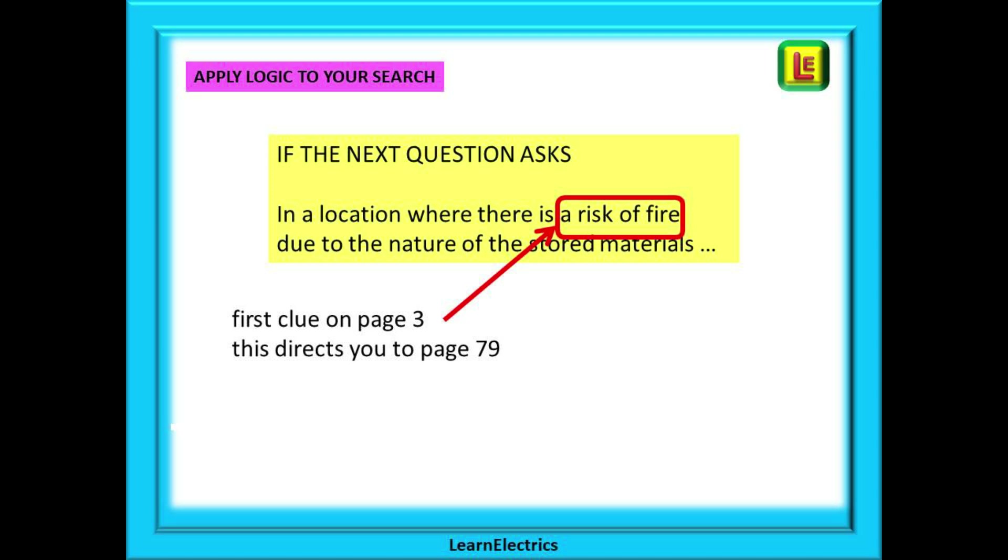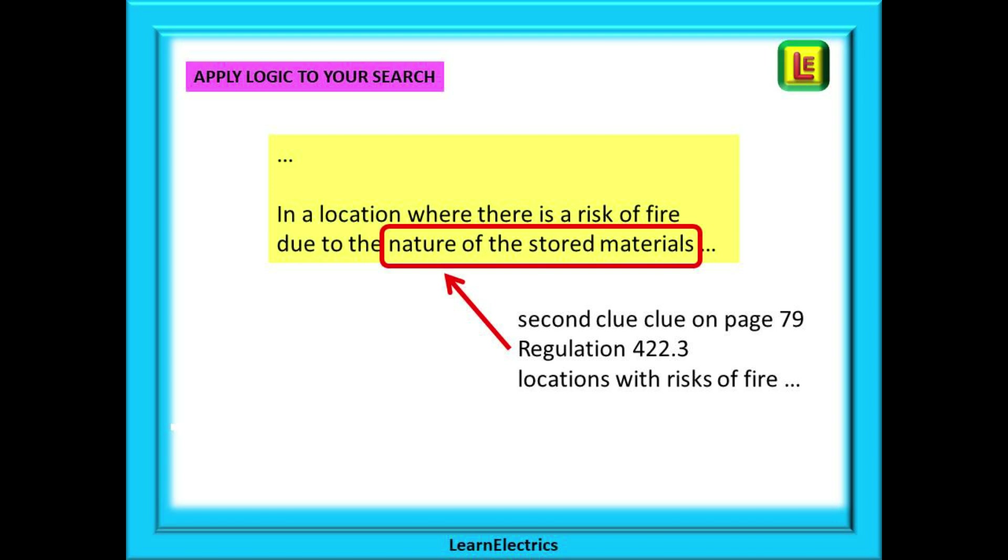The next question might ask about the risk of fire and stored materials. Risk of fire is our first clue. On page 3 we can find Chapter 42, thermal effects, and that sounds like fire to me. Now we are directed to page 79. On page 79 there is another content section and scanning down we can find our second clue: locations with risks of fire due to the nature of processed or stored materials. It tells us quite directly to go to regulation 422.3. How easy is that if you just follow the contents pages?